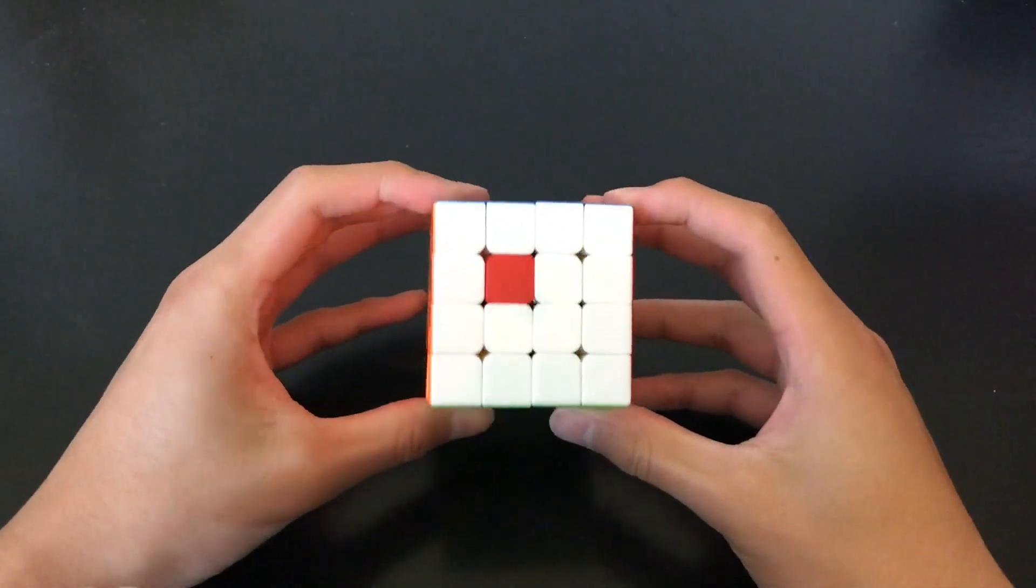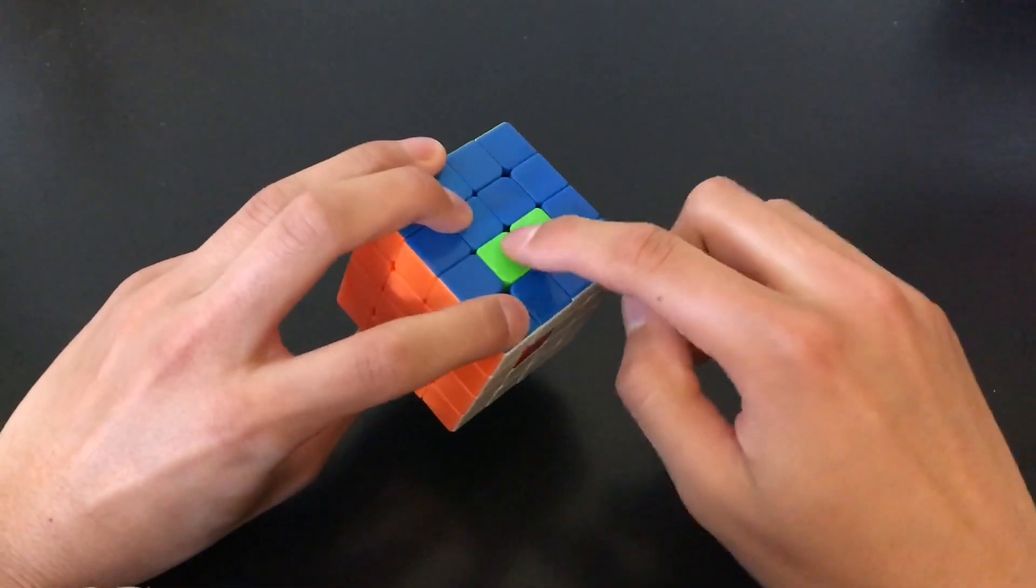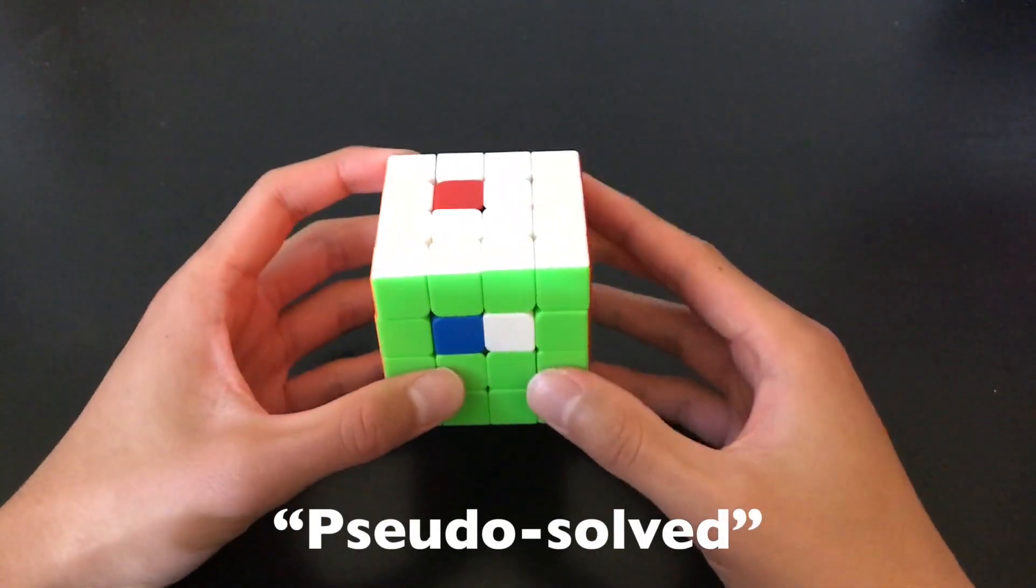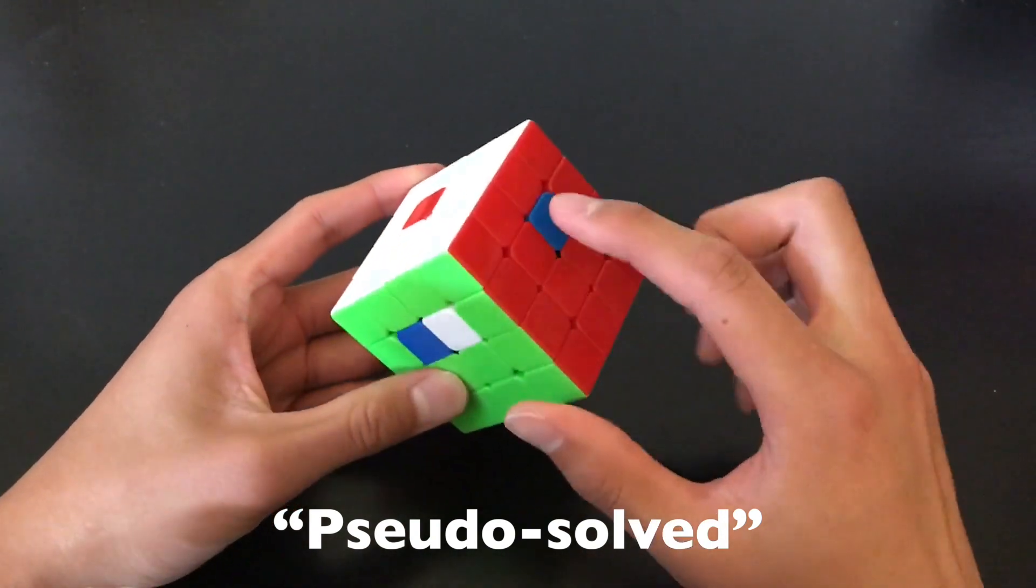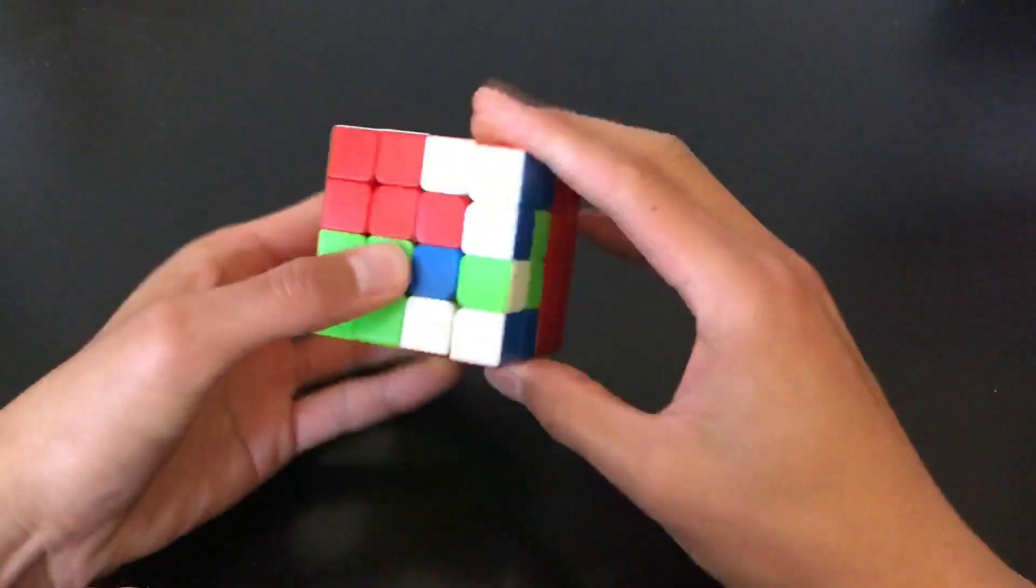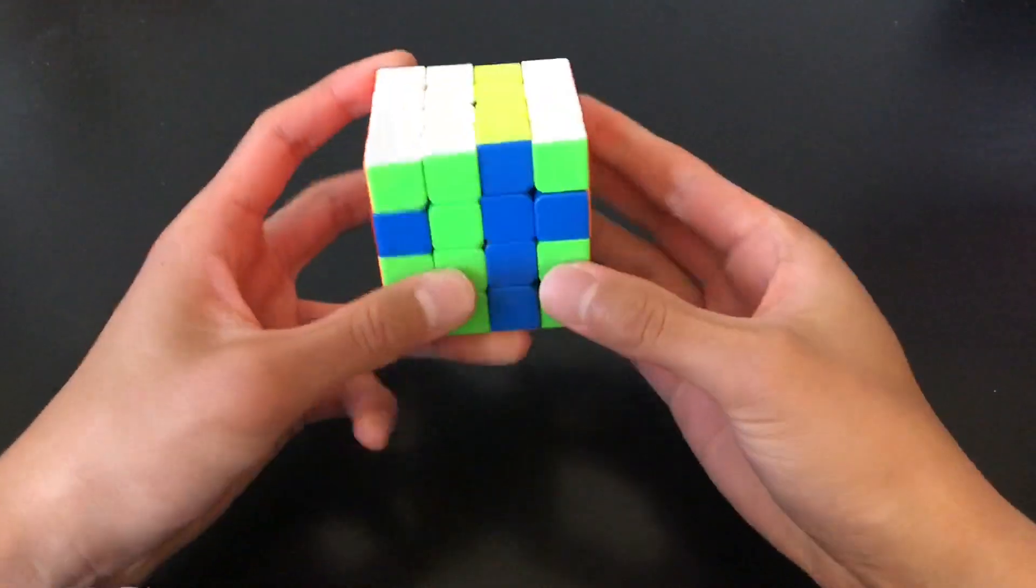Let's take a look at this scramble. Notice that we have one blue center on the green face and two green centers on the blue face. Now, these three centers are what I call pseudo-solved because we can solve this blue center into this spot, which sets us up for a two-center, two-center alg.